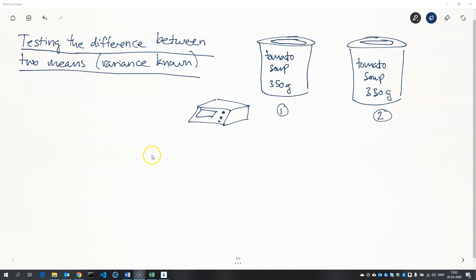We're going to be testing the difference between two means. In this case, I put up a scenario in which we have a can of tomato soup here.